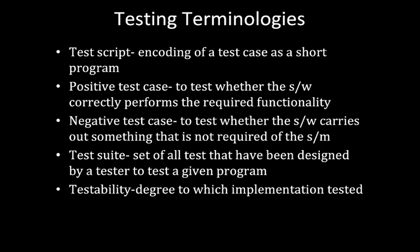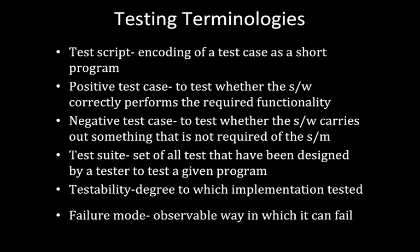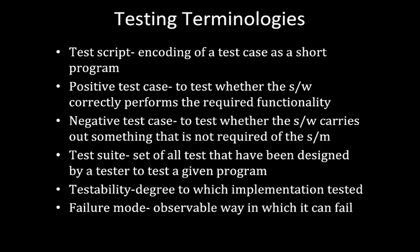'Testability' is the degree to which an implementation is tested — how much we test, covering both functionality and performance. 'Failure mode' is an observable way in which a system can fail; all failures with similar observable symptoms constitute a failure mode. For example, in a railway booking system, failure modes might include failing to book an available seat, booking the wrong seat number, or a system crash.